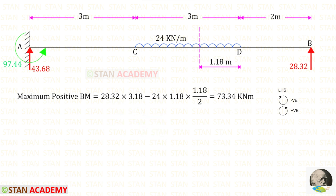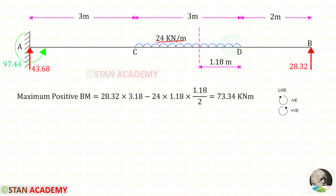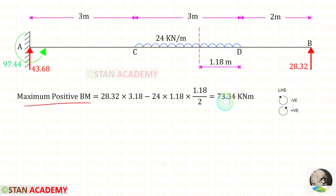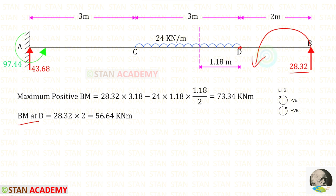Now let us find the maximum positive bending moment. RB acts anticlockwise (positive) with distance 2 plus 1.18 = 3.18. The UDL acts clockwise (negative); multiplying the distance and then dividing by 2, the maximum positive bending moment is 73.34 kNm. Now let us find the bending moment at point D: RB acts anticlockwise with distance 2, giving a bending moment of 56.64 kNm.